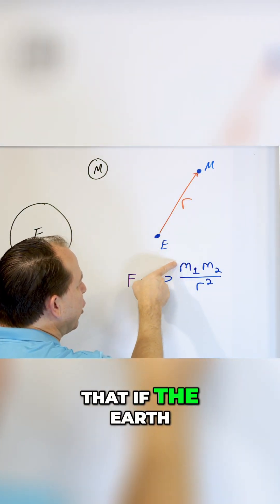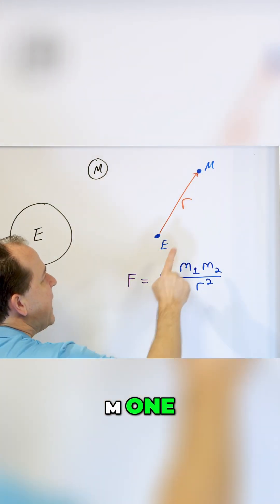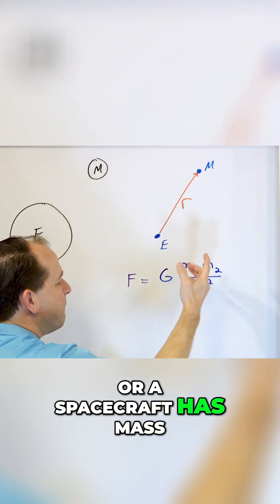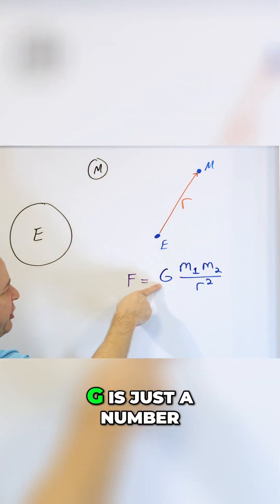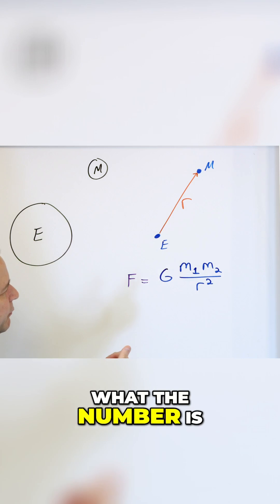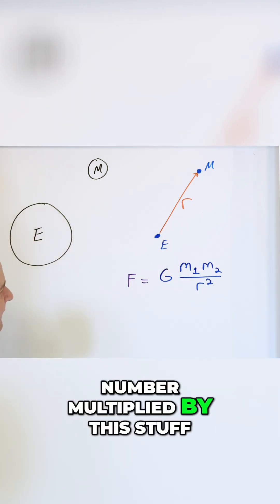So you can see that if the Earth has mass, that would be like M1, and if the moon or a spacecraft has mass, these are both numbers. G is just a number. I could tell you what the number is, but it's just a number multiplied by this stuff.